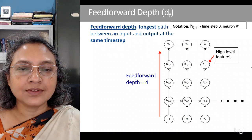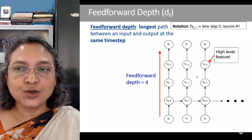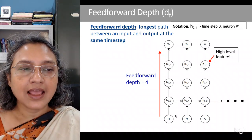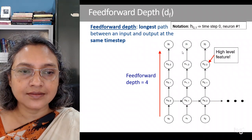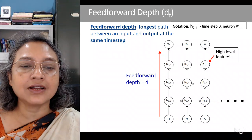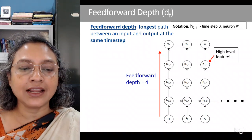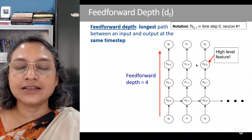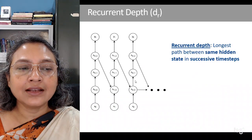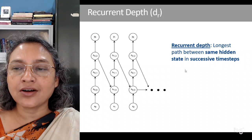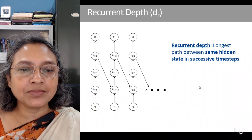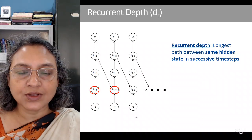When looking at a recurrent neural network, there are two types of depth involved. The first is if we have multiple hidden layers: the feed-forward depth is the longest path between the input and the output at the same time step. For example, in a configuration with input, three layers of hidden nodes, and output, the feed-forward depth is equal to four. On the other hand, the recurrent depth is defined as the longest path between the same hidden state in successive time steps. If the sequence is of length T, the recurrent depth is of size T.